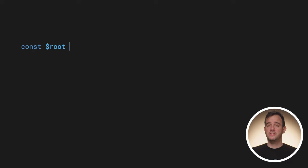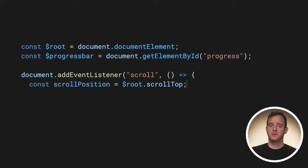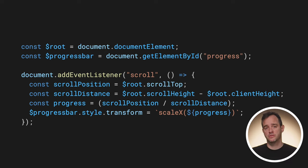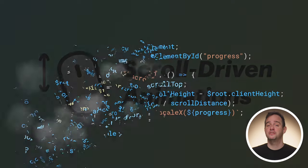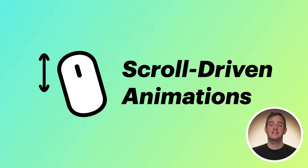To do this, you typically have to set up a scroll listener with some JavaScript or resort to an intersection observer to track elements across the scroll port. In this video series, I'll show that you no longer need these libraries, as scroll-driven animations are now part of the web platform.